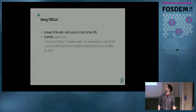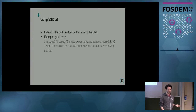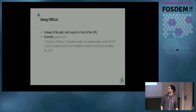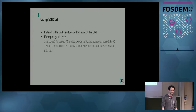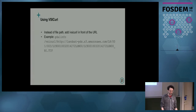Here's an example of using the VSI curl driver. As you can see, it's basically just doing /vsicurl/ followed by the URL. This one is a Landsat 8 image on the Landsat AWS bucket, which is a great open data source if you want to start playing around with raster imagery.